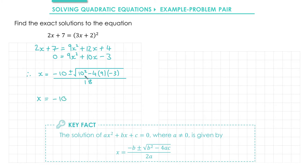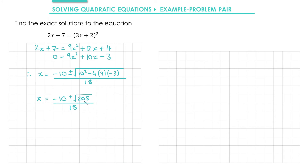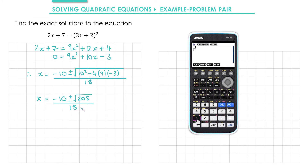Tidying up: 10 squared is 100; 4 times 9 is 36, times 3 is 108. As we've got a negative times a negative we'll add them — 100 plus 108 is 208. 208 can be simplified because 16 goes into it, however to save time we'll just type this into our calculator. So we do minus 10 plus root 208 over 18 to get the simplified answer.